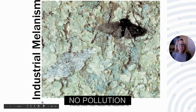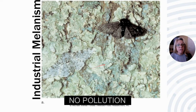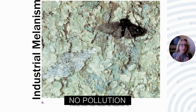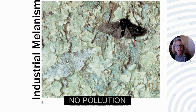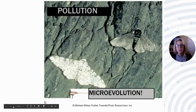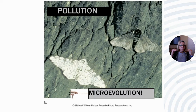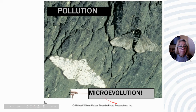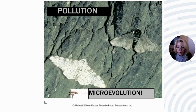Remember industrial melanism? Pre-industrial revolution, trees were light-colored and no soot. The light-colored peppered moth is an adaptation that increases fitness because birds are less likely to see it. The dark moth would be more visible. Once the environment changes due to pollution on the trees, it becomes more adaptive to be dark. This change in allele frequency of moth color is microevolution — they're still the same species; it's just a frequency change in which color is adaptive for that environment.